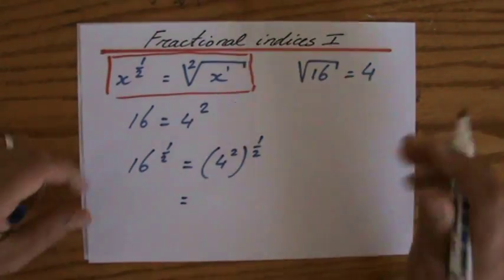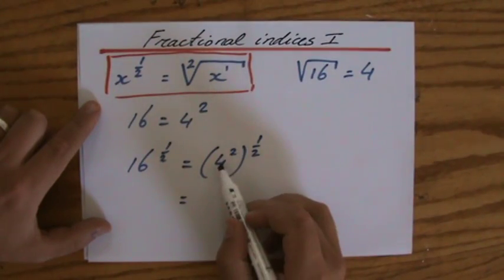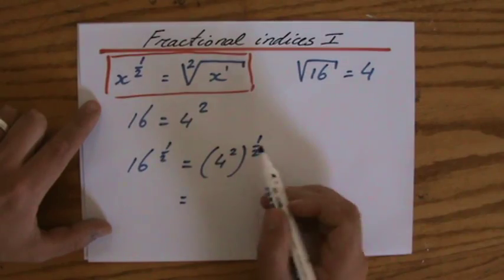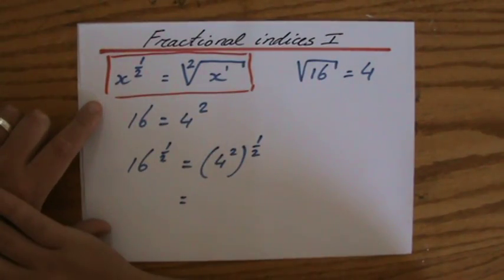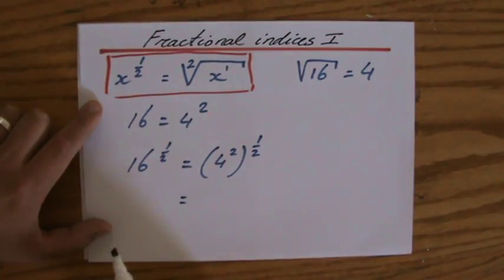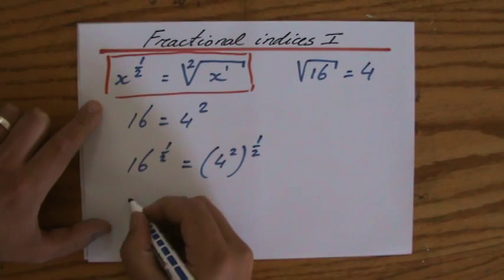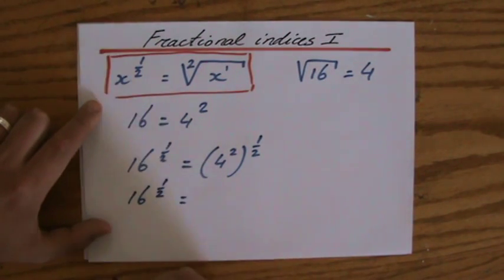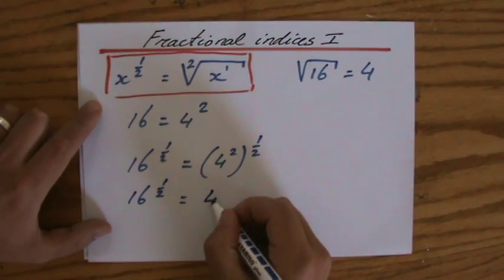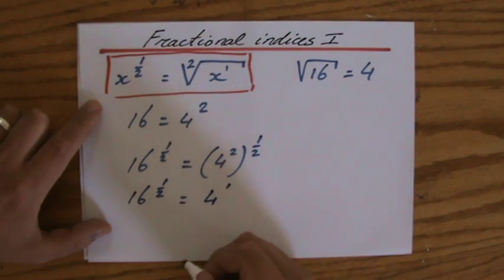Okay, then the third law of indices says, if you have brackets, what do you do with those indices? You multiply them. So 2 times a half is 1. So actually, 16 to the power of a half equals 4 to the power of 1.